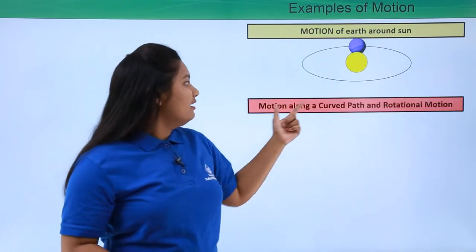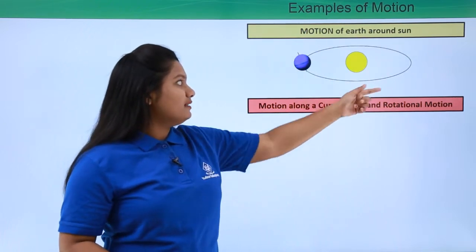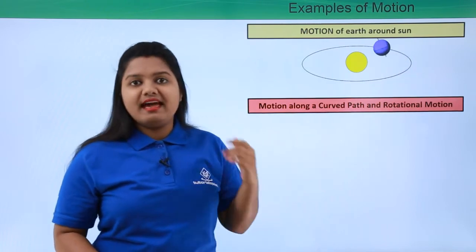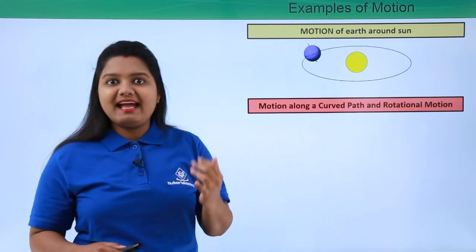That is one is motion along a curved path, that is elliptical path around the sun, as well as rotational motion at its own position with respect to a fixed axis.